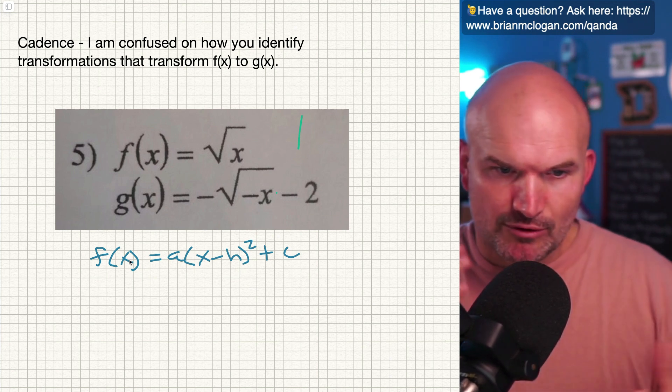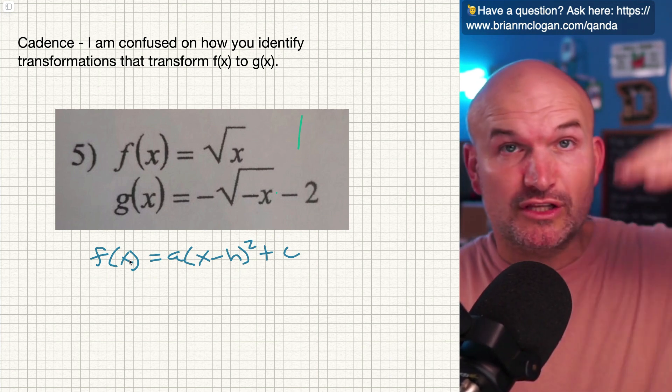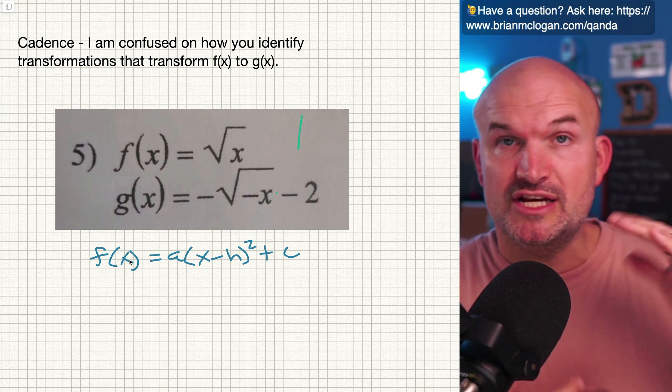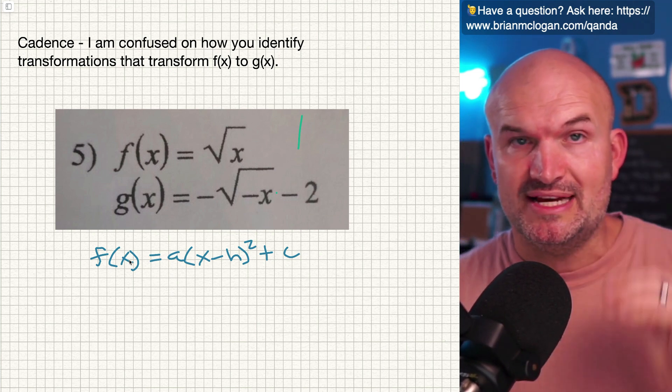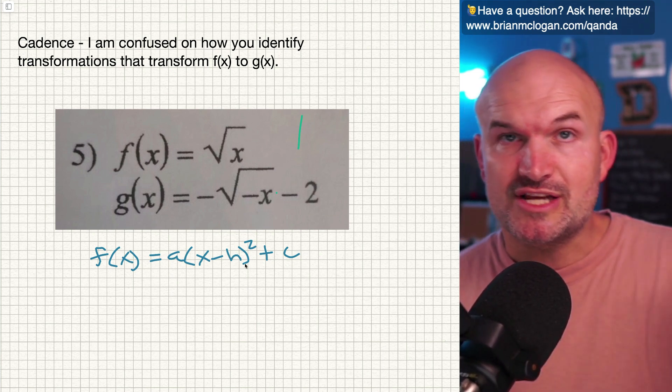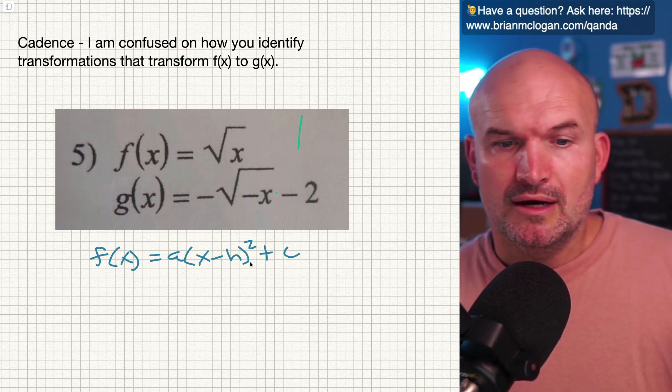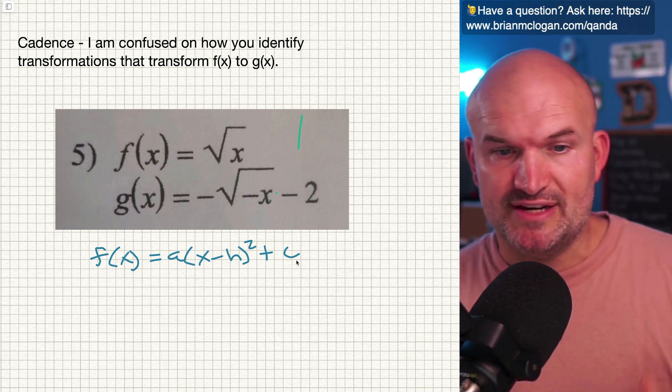Okay, so let's kind of remember what happens here. A vertically stretches or compresses the graph. Also, it changes the orientation. It reflects it about the x-axis. H is a horizontal shift, left or right, and c is a vertical shift, up or down.